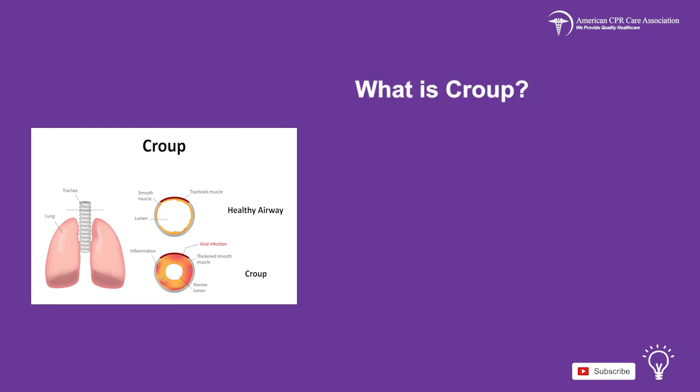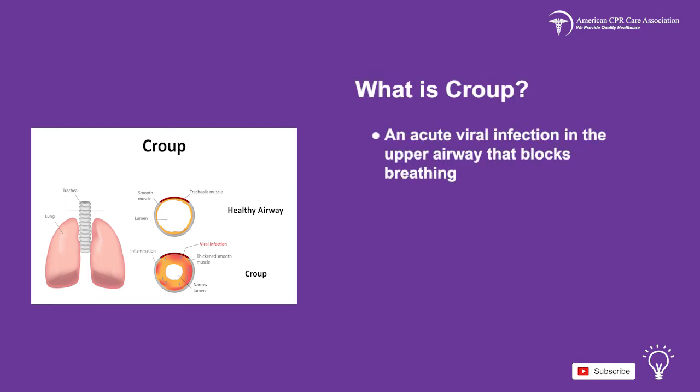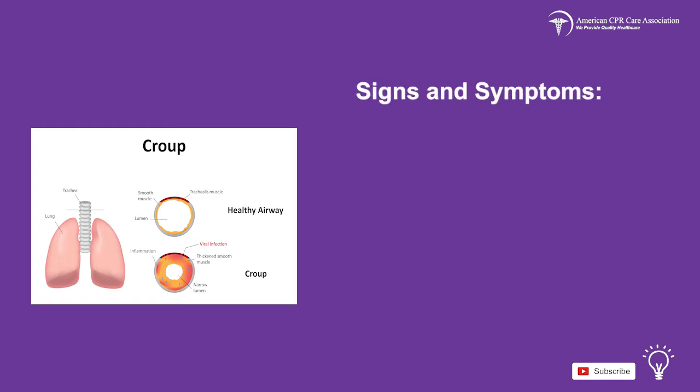Croup, which occurs most often in children, is an acute viral infection in the upper airway that blocks breathing and is exhibited by a barking cough, stridor, and hoarseness.